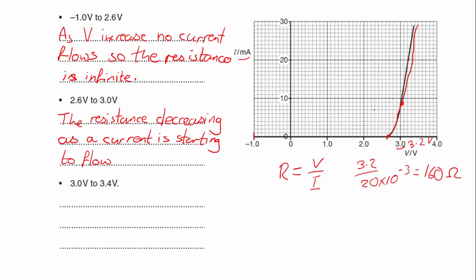So if I went 3 divided by 8 times 10 to the minus 3, that would give me a resistance of 375 ohms.